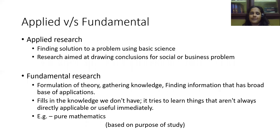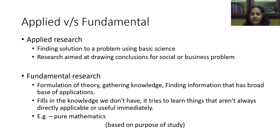Next, we will see the difference between applied and fundamental research. In applied research, we will be finding solutions to a problem in our society using basic science. Here we are applying existing knowledge to practically solve a problem. The research is aimed at drawing conclusions for social and public problems. Whereas in fundamental research, we will be formulating theory, gathering knowledge, finding information that has broad ways for application. Here we are improving our scientific theory, improving our understanding of a particular phenomenon. We are trying to fill the gaps in the knowledge, trying to learn new things which may or may not have immediate application. For example, fundamental research includes pure science — what is photosynthesis, what is respiration.